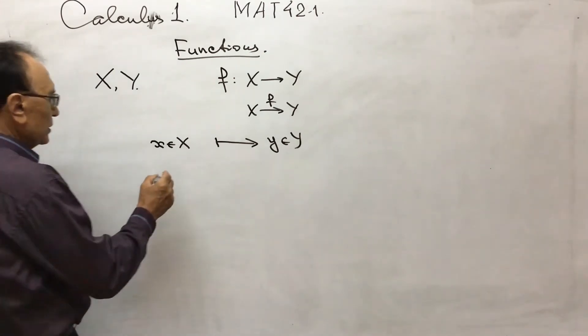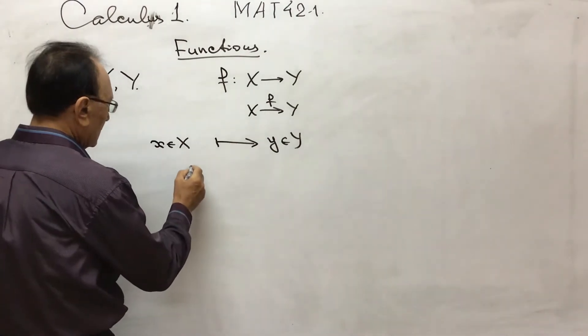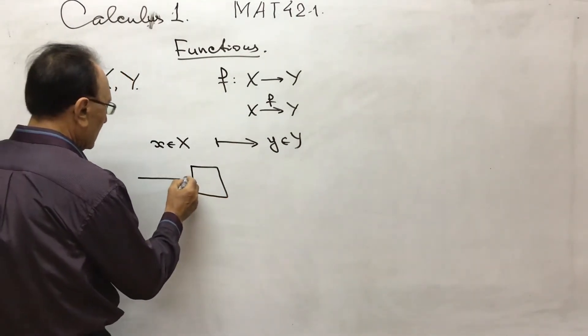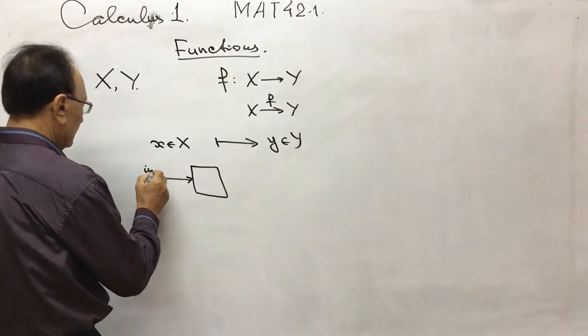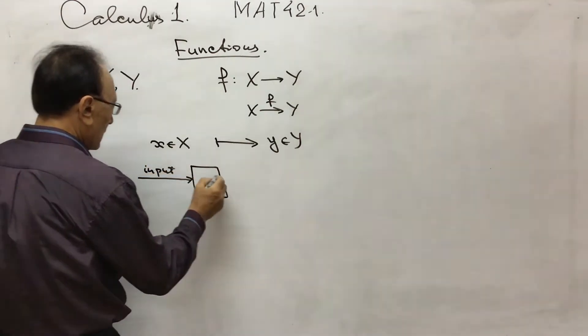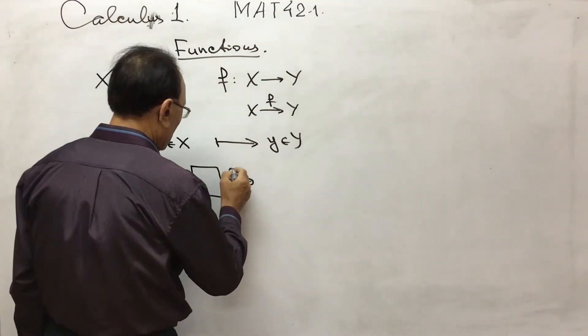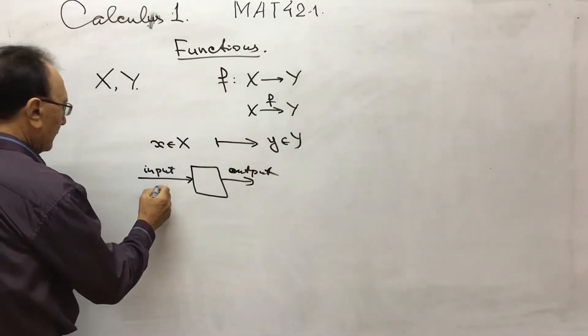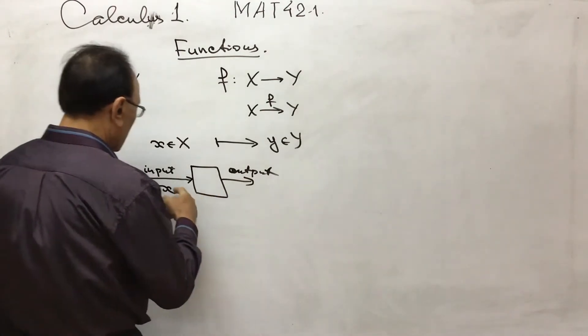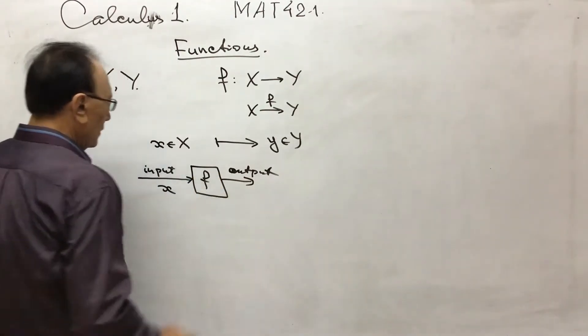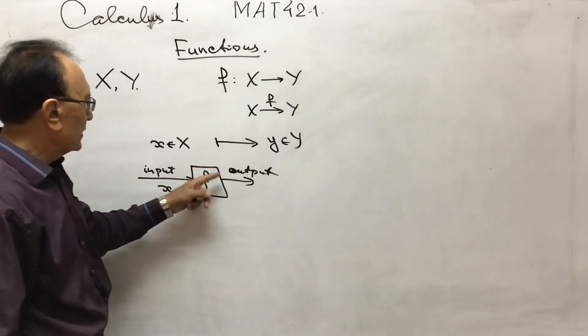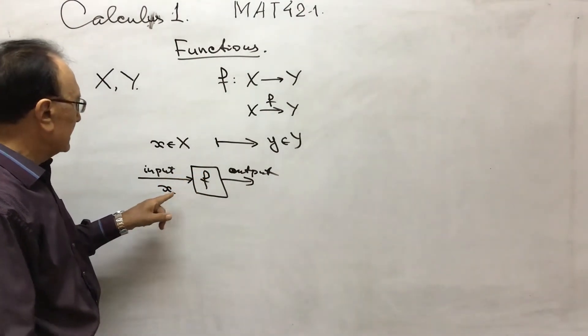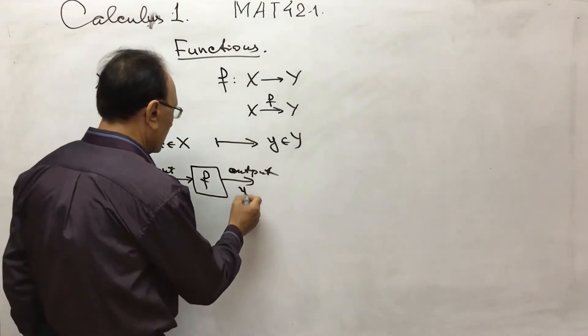So function you can imagine as some machine. This is an input and output. So you have x here. Then the function, some process will go on. It works over x. That result, you will get y.